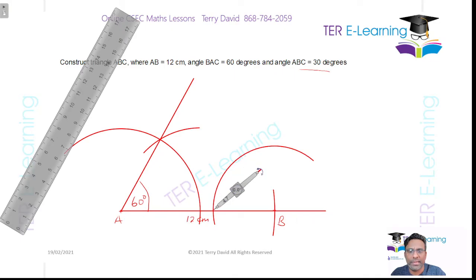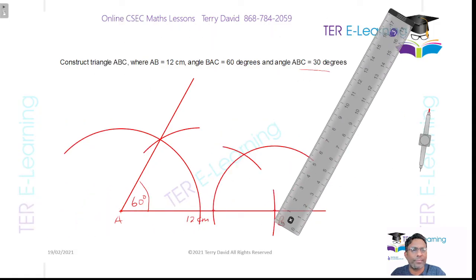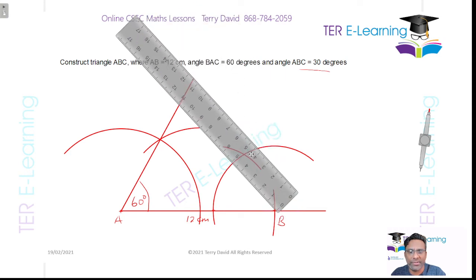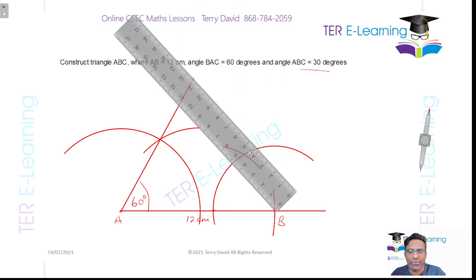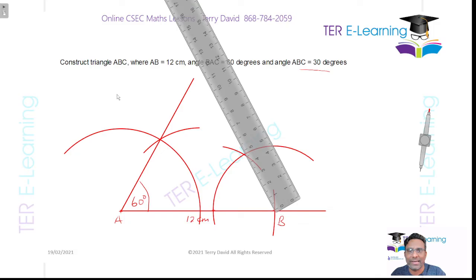If I draw a line through that, that's gonna give me 60 degrees. So 30 degrees is actually half of 60 degrees. So I'm just going to draw this here to show you exactly what I need to do. Basically we'll have to bisect that angle that we just constructed.